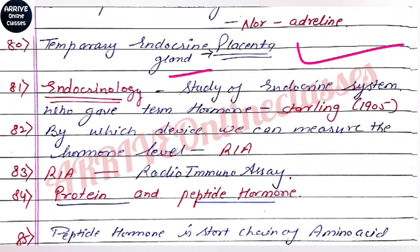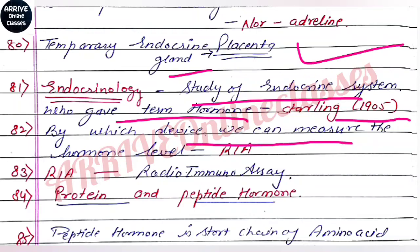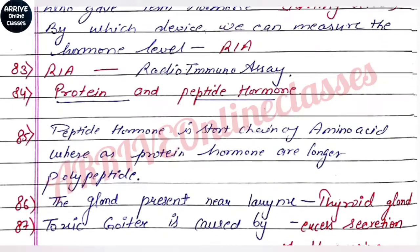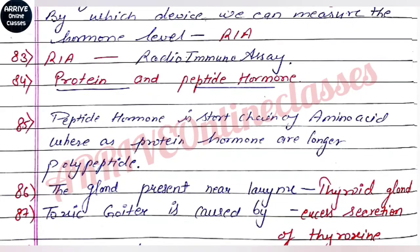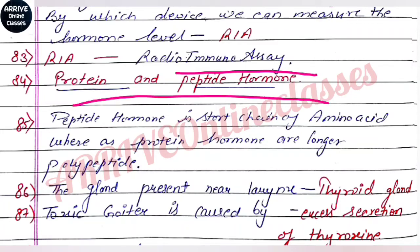Endocrinology is the study of the endocrine system. The term 'hormone' was coined in 1905. The device used to measure hormone levels is RIA, that is Radio Immuno Assay.